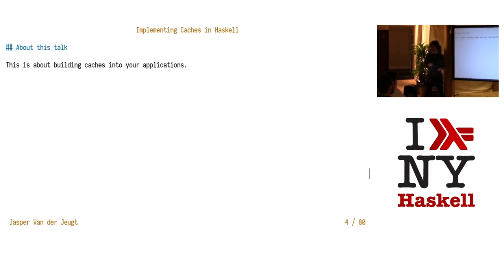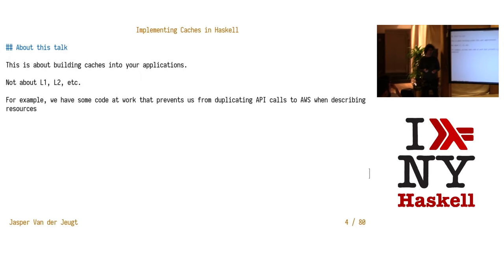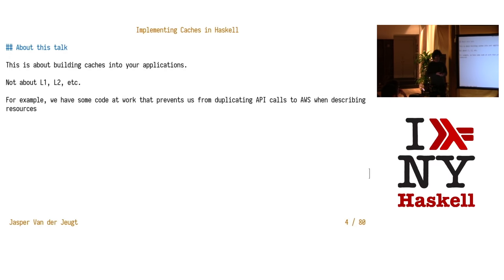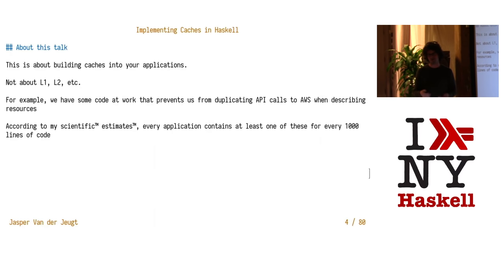This talk is going to be about adding caches to your applications. It's not about L1 cache or L2 cache — we're all familiar with that. It's more about the sort of caches that you write again and again to embed in your web apps and whatever application you're working on. For example, in our case we work with AWS a lot — we have described calls to different resources and we don't want to duplicate these calls if we've already made them in the last 10 minutes, so we have a simple cache for that.